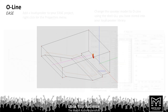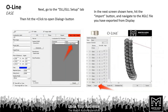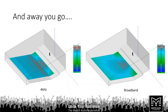We may also want to model O-Line arrays in EASE 4. Once we've added our loudspeaker to an EASE project and right-clicked on the properties menu, we change the speaker module to O-Line using the Shell GLL in the loudspeaker library. We then go to the DLL GLL setup tab, open the dialog, and use the import function to navigate to the XGLC file exported from the Display file — loading in all the inter-cabinet angles and DSP parameters to ensure it is mapping correctly. The resulting model shows very consistent coverage front to back.